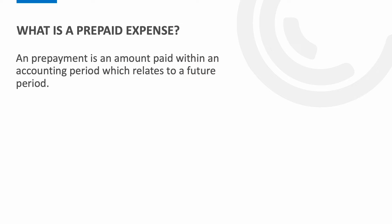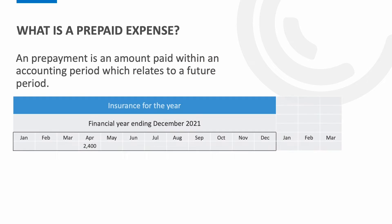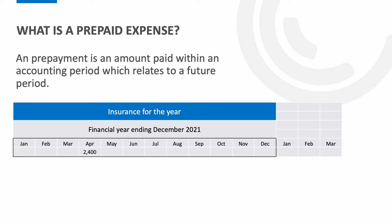Now let's look at prepaid expenses in more detail. A prepayment of an expense occurs when the business has paid for goods or services before the end of the period but which relate to a future period. Take a look at the example on screen. This business has paid for insurance that covers from April through to March, i.e. the insurance covers a 12-month period. Their financial year runs from January through to the end of December.